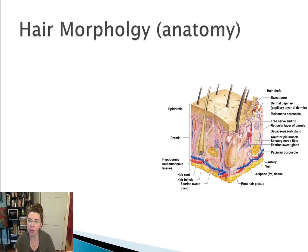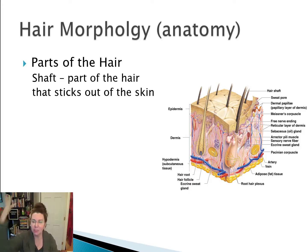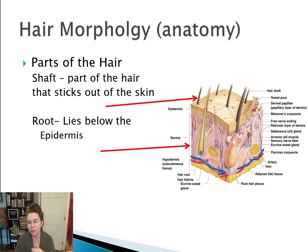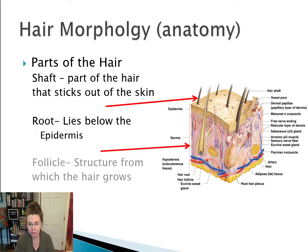Let's talk a little bit about hair morphology, or hair anatomy. The shaft of the hair is the part of the hair that sticks out of the skin — all the hair you can see is the shaft. Underneath the skin, below the epidermis, is the root of the hair. The root extends down into the dermis of the skin, and that's why when you yank a hair out it really hurts, because that root is connected to muscles and nerve endings and has its own blood supply. The entire part that the root grows in, where the nerves and blood supply nourish the hair, is known as the follicle — the structure from which the hair itself grows.